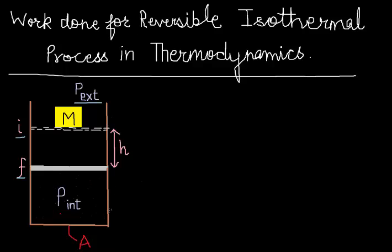So let's start with the basic piston cylinder assembly. Here initially the piston is at position I and from here it is compressed to a position F by a block of mass M.